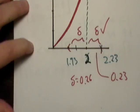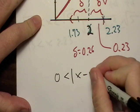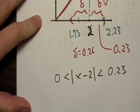You always use the smaller one. So let's go ahead and rewrite our little interval there. And that's going to be less than 0.23.